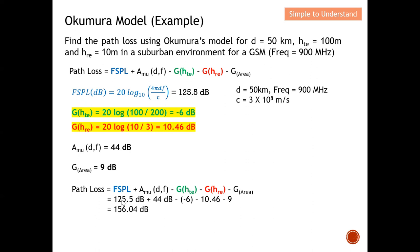The path loss using the Okumura model for this situation is 156.04 dB. To summarize: I defined the Okumura model, explained the key terms of its equation, and used this example to illustrate how to apply the Okumura model to calculate path loss. Thank you so much — I hope to see you soon, bye for now.